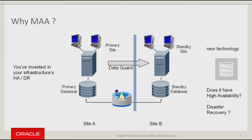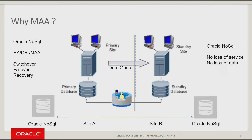Whenever you incorporate a new technology into your data center, you obviously study its featured functionalities. You must also study its compatibility to keep your business continuity — your infrastructure's resilience to disturbances. This new technology must be consistent with your business continuity and the investments made in your data centers, like high availability and disaster recovery. You cannot afford to introduce a weak link that could increase your system's susceptibility to outages or data loss. Oracle NoSQL Database has been conceived with high availability and disaster recovery in mind. The Maximum Availability Architecture is a blueprint of the best HA and DR practices, based on expert recommendations and customer experiences.